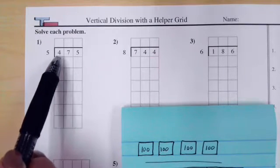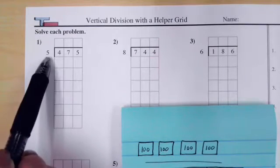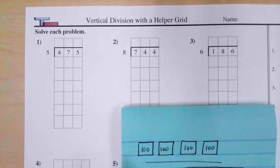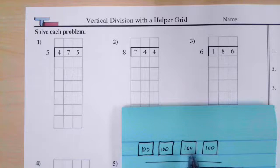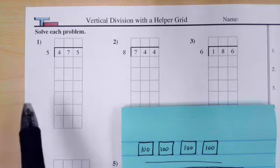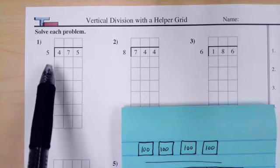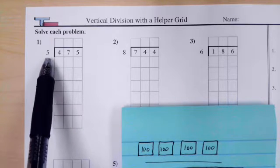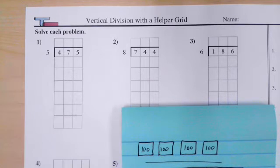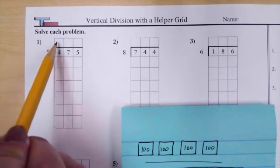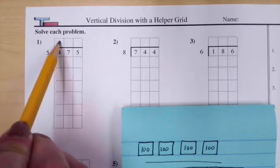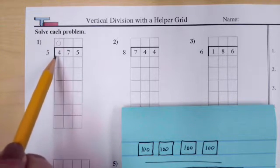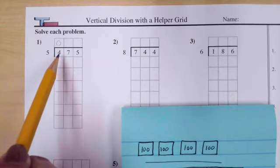If we only have 400s — one, two, three, four — do we have enough to make a group of five? We don't. So we don't normally put anything here, but you can imagine there's a zero: we were able to make zero groups with these 400s.